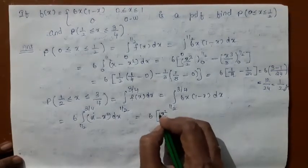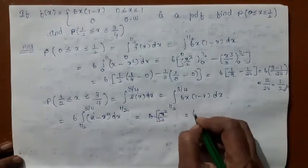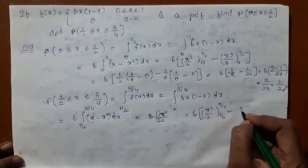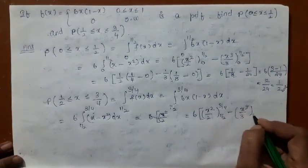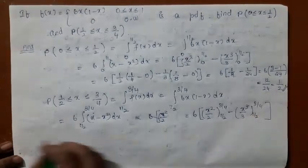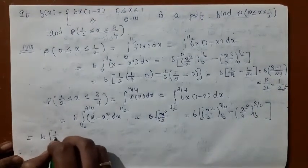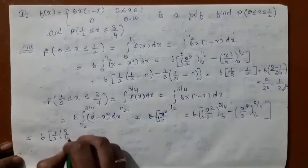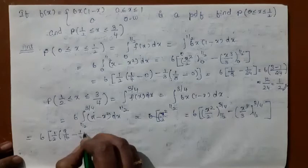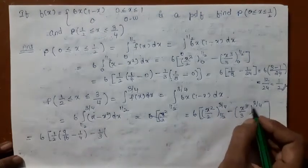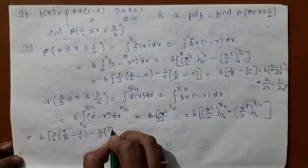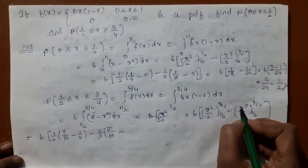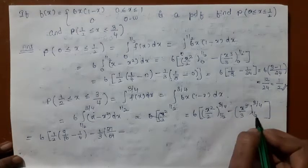That is 6 times the integral from 1/2 to 3/4 of (x − x²) dx. On integration, x gives x²/2 with limit 1/2 to 3/4, and x² gives x³/3 with limit 1/2 to 3/4. So you have 6 × (1/2) × [(3/4)² − (1/2)²] minus (1/3) × [(3/4)³ − (1/2)³].